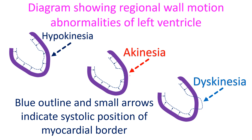If a particular region contracts poorly, it is reported as hypokinetic. A region which is not contracting at all is reported as akinetic. Sometimes a region might bulge out when all the other regions are contracting — such a region is called dyskinetic. Dyskinesia is a feature of an aneurysmal segment. Regional wall motion abnormalities are common after a myocardial infarction.